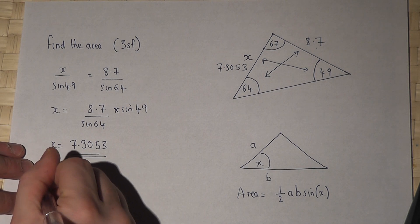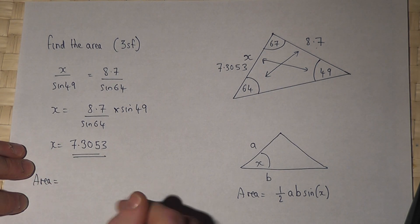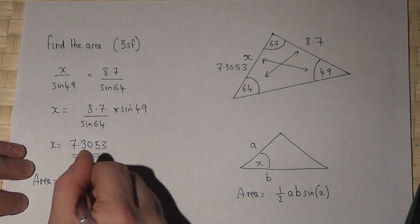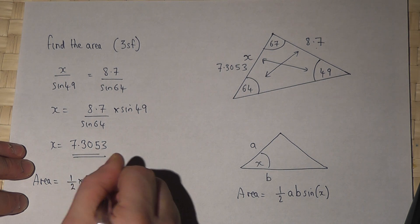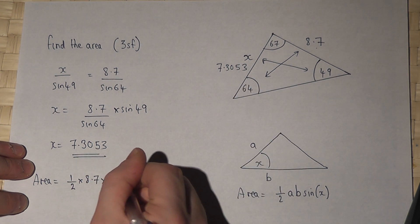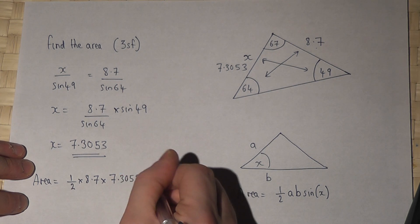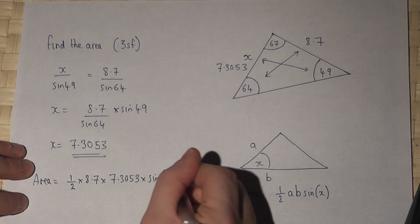So the area will equal a half times 8.7 times by this side here times by sine of 67.